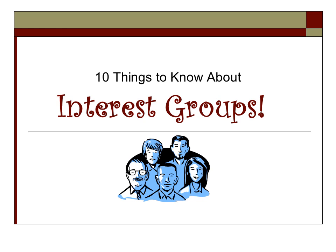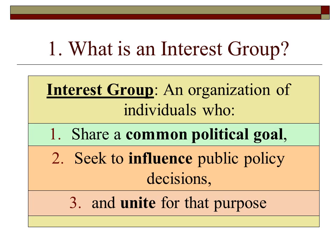10 Things to Know About Interest Groups. What is an interest group? An interest group is an organization of individuals who share a common political goal, seek to influence public policy decisions, and unite for that specific purpose. An interest group must have all three of these parts.